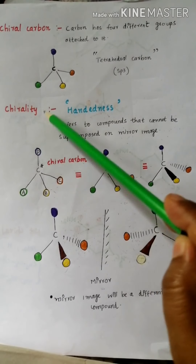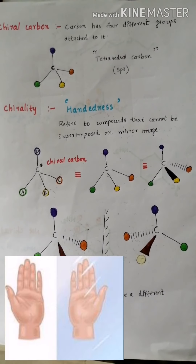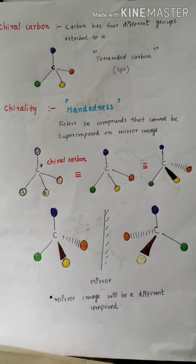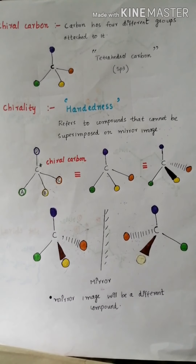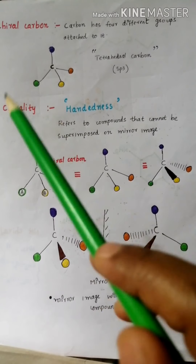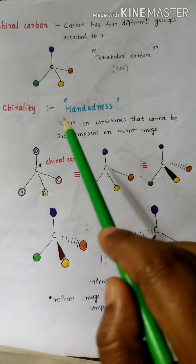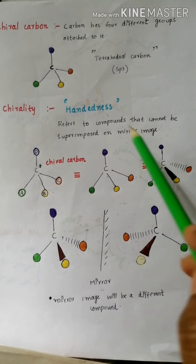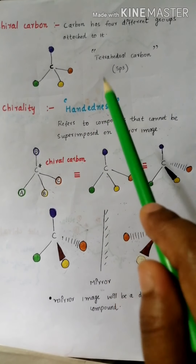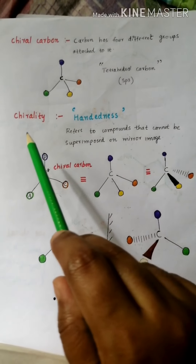The term chirality is related to the term handedness. Chirality is defined by our hand property — whenever you place your hand on a mirror, you look at the two images formed. That kind of property is shown in chirality, which is why it is defined in terms of handedness. It actually refers to a compound that cannot be superimposed on its mirror image.